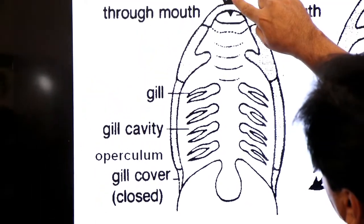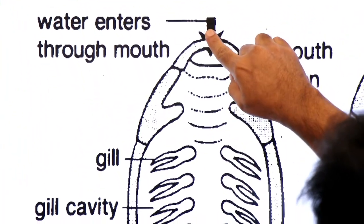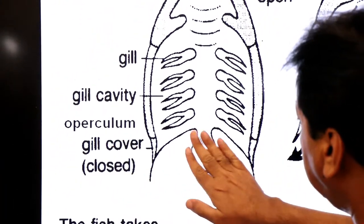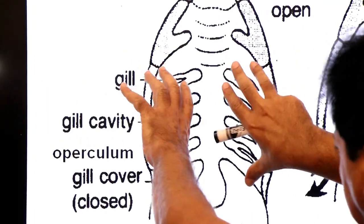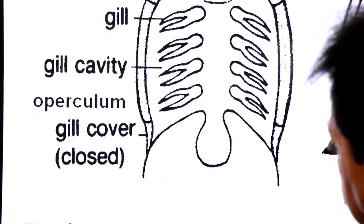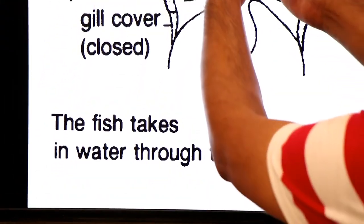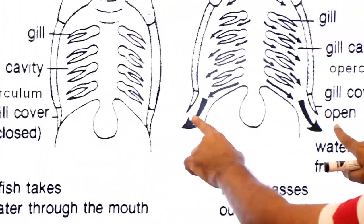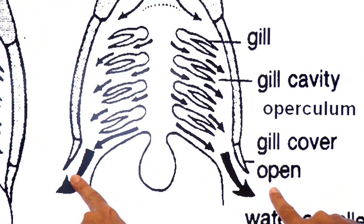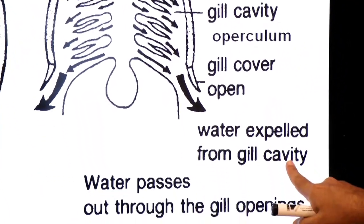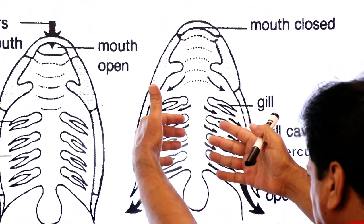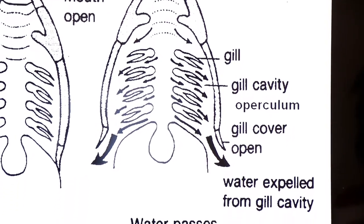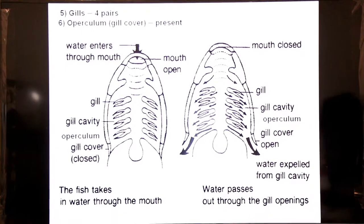Now, these fishes draw oxygenated water by the way of their mouth. When water enters through the mouth, then the fishes close the operculum, gill cover. Now look at here, the valves of the operculum are open, so water is expelled from gill cavity. And when water flows into the gill cavity, then gaseous exchange occurs. So bony fishes use four pairs of gills for gaseous exchange.